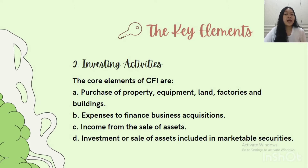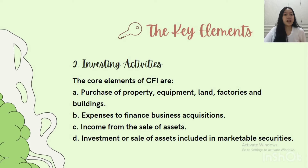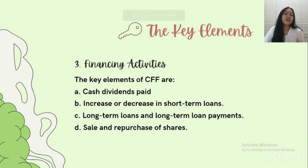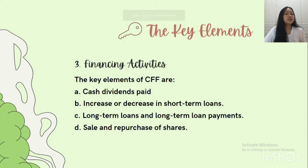The core elements of investing cash flow are: purchase of property, equipment, land, factories, and buildings; expenses to finance business acquisitions; income from the sale of assets; and investment or sale of assets included in marketable securities. The key elements of financing cash flow are: cash dividends paid, increase or decrease in short-term loans, long-term loans and long-term loan payments, and the sale and repurchase of shares.